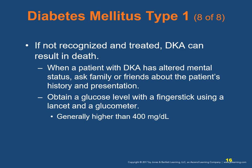When a patient with DKA has altered mental status, ask family or friends about the patient's history and presentation. Obtain a glucose level with a finger stick using a lancet and glucometer. Generally, you will find readings higher than 400 mg/dL.